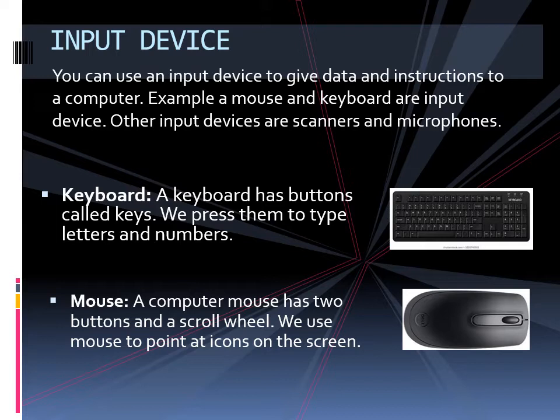Mouse. A computer mouse has two buttons and a scroll wheel. We use the mouse to point at icons on the screen.